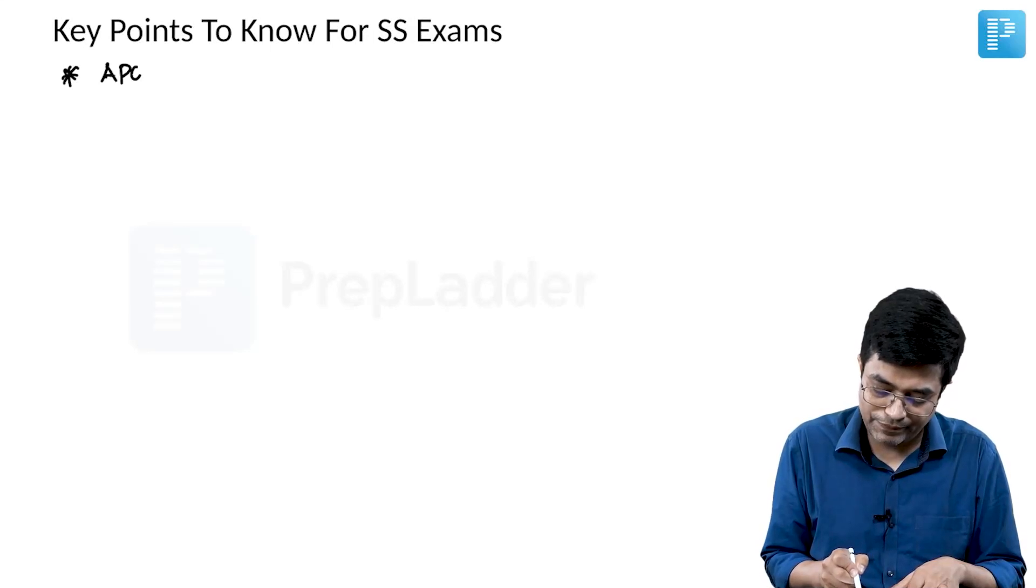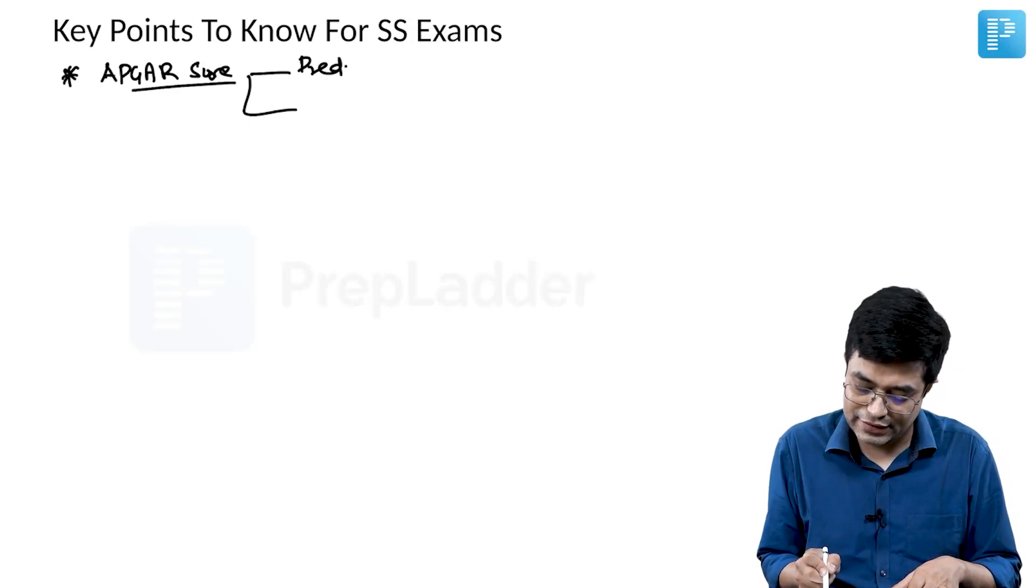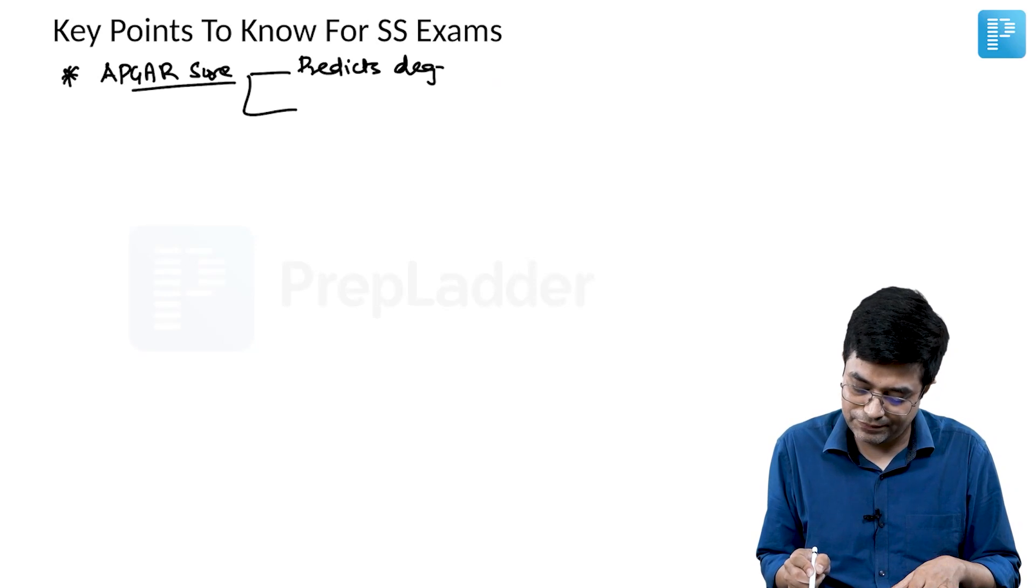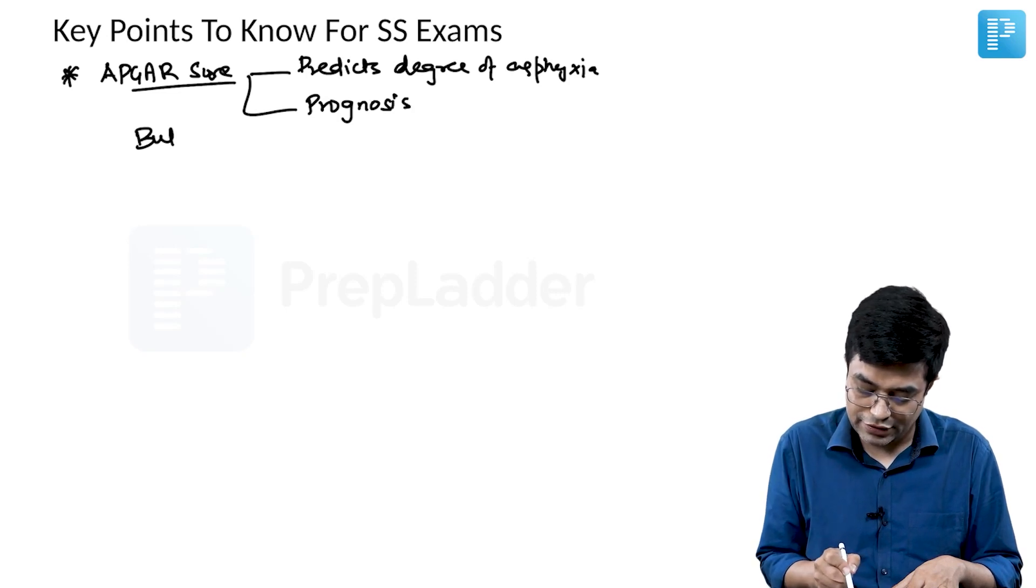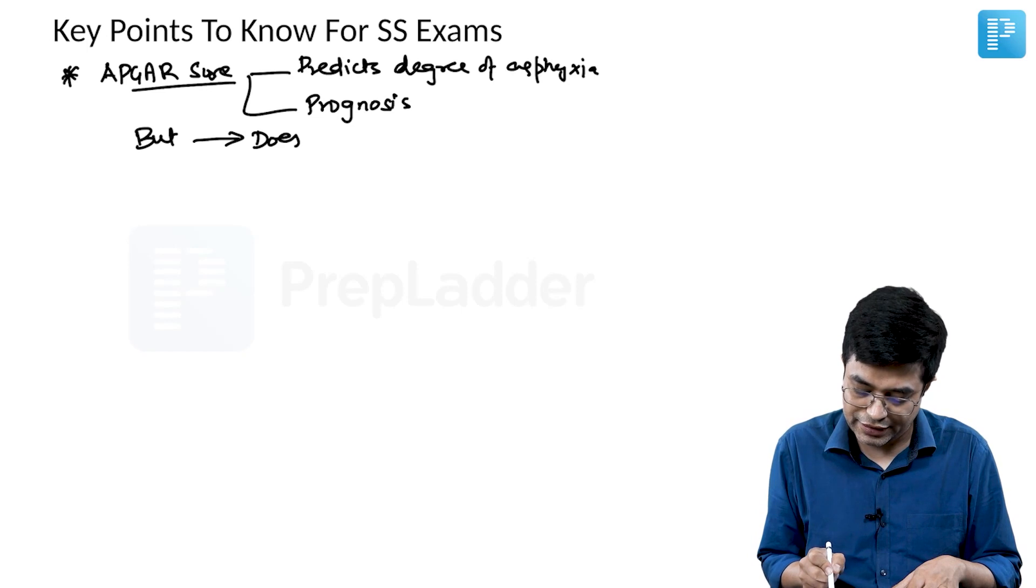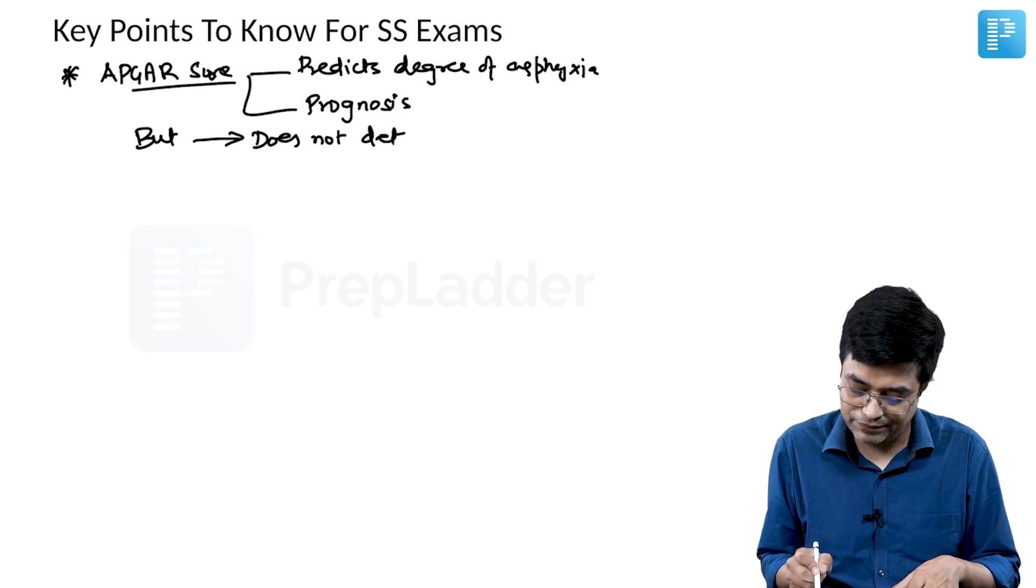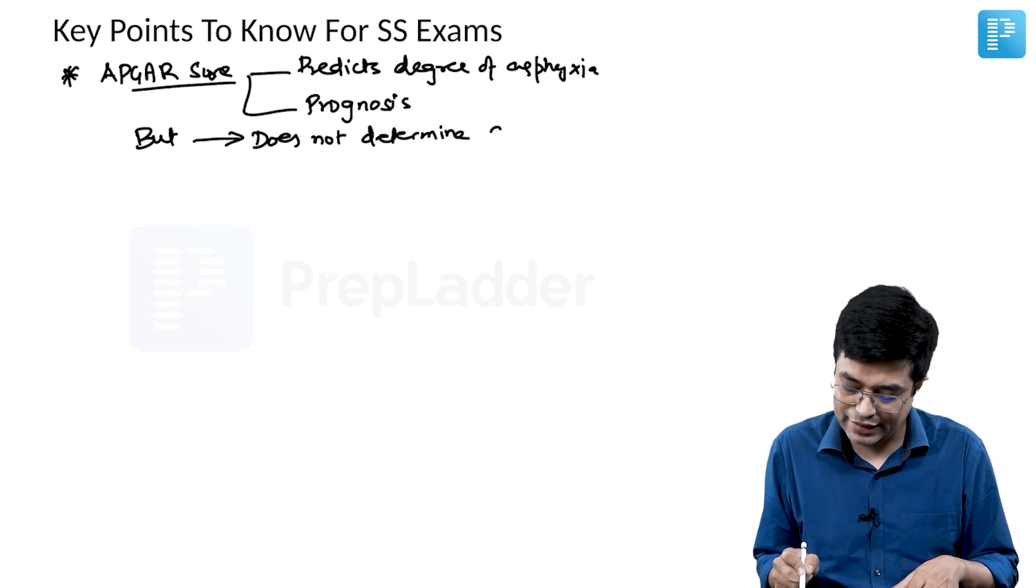First of all, APGAR score is a score which predicts the degree of asphyxia and it is useful for prognosis. But it does not determine active resuscitation.